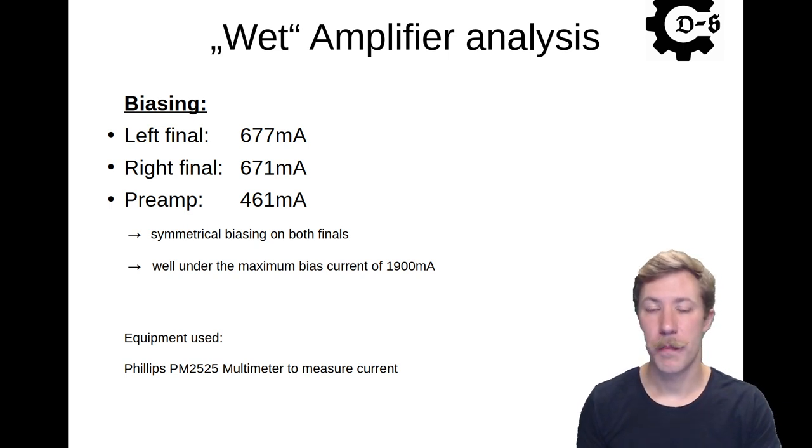As I mentioned earlier, the LDMOS needs gate biasing in order to temperature compensate. And here, Michael measured this with his Philips PM2525 multimeter to measure the input current to the left and right final stages where we have the large 250 watt LDMOS output transistors and also the preamp amplifier. Now, he discovered that it has symmetrical biasing on both of the LDMOS output transistors and it is way below the maximum specified bias current in the datasheet.